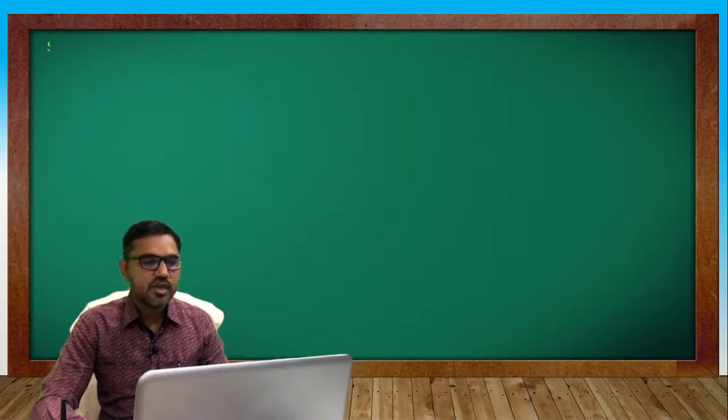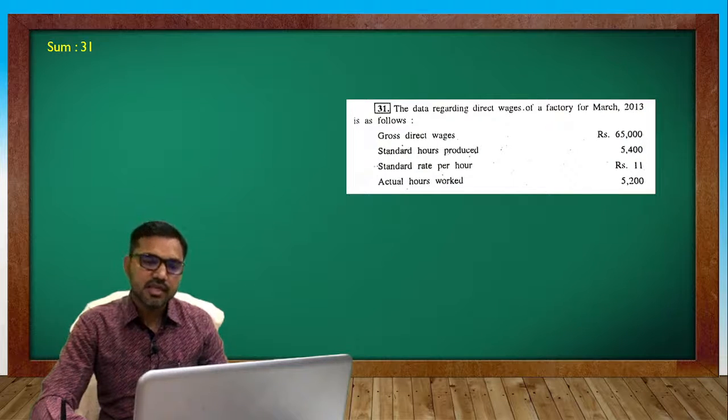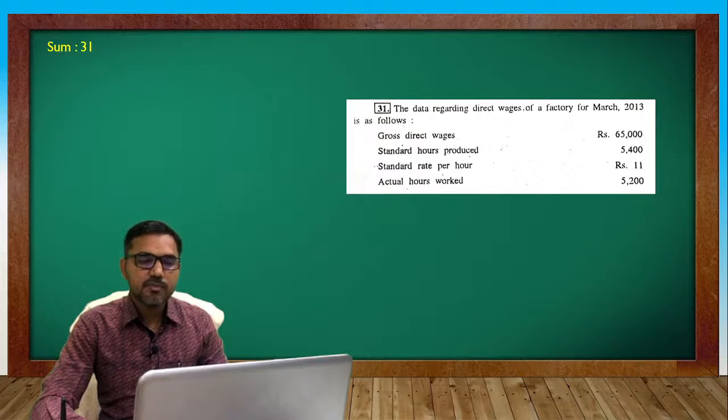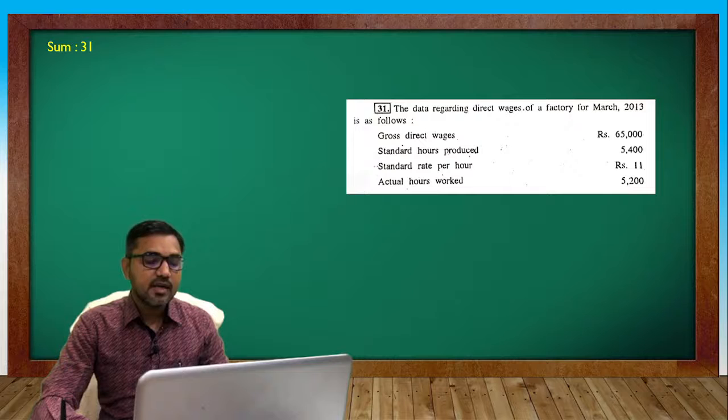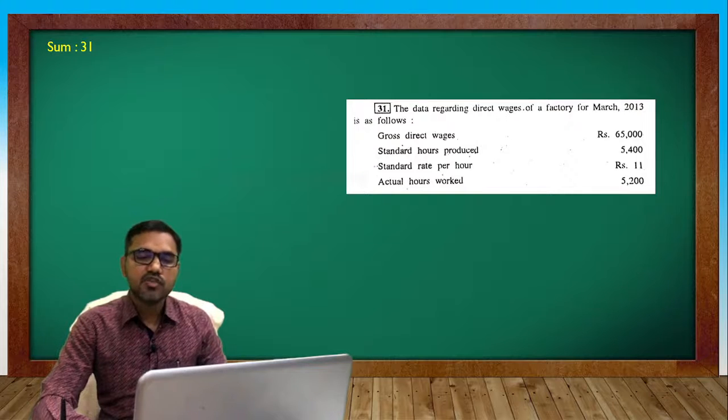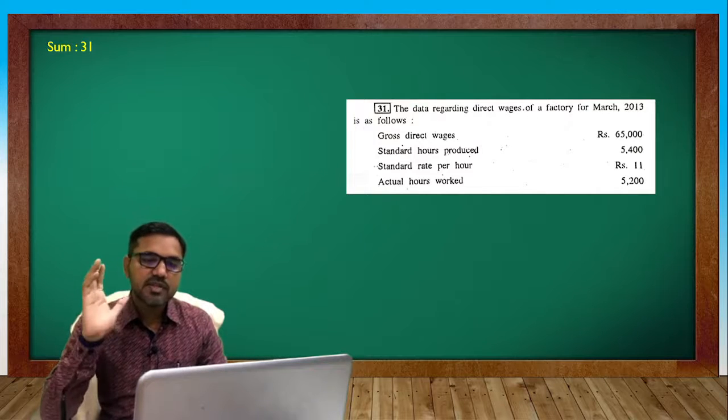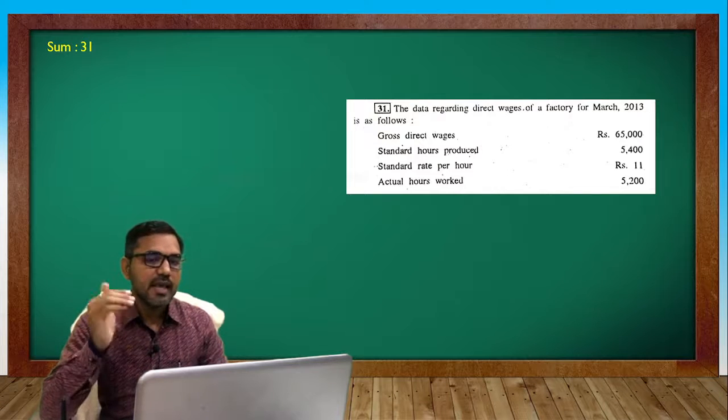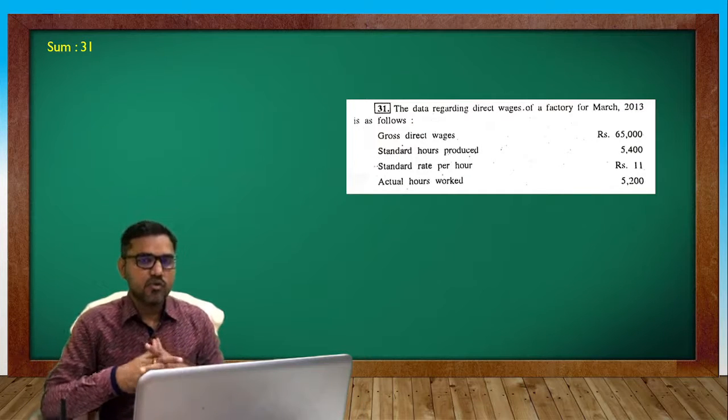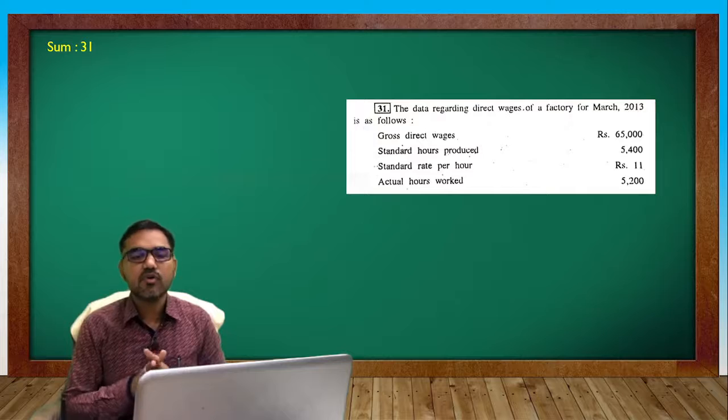Next question number 31. The data regarding direct wages of a factory for March 2013 is as follows: gross direct wages 65,000, standard hour produced 5,400, standard rate per hour 11 rupees, and actual hours worked 5,200. So we have standard hours, actual hours, standard rate, but actual rate we don't have. But gross direct wages total - actual hours into actual rate equals gross direct wages.